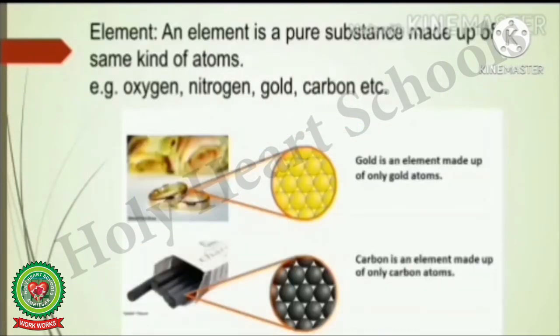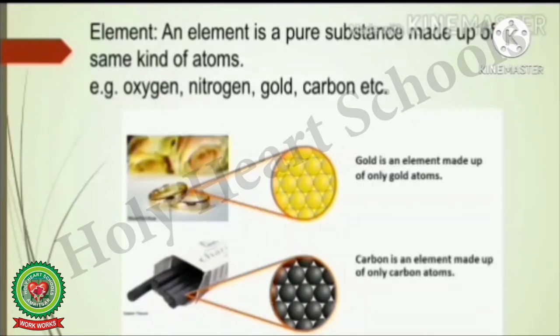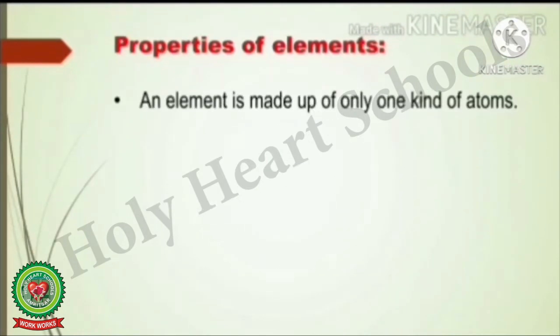An element is a pure substance made up of the same kind of atoms. For example, oxygen, nitrogen, gold, and carbon are all elements. Gold is an element because it is made up of only gold atoms. Carbon is an element because it is made up of only carbon atoms. Elements are made up of only one kind of atoms, as we have discussed.